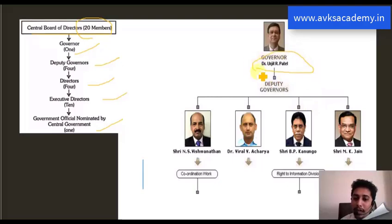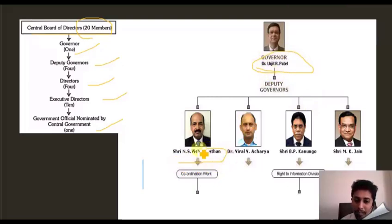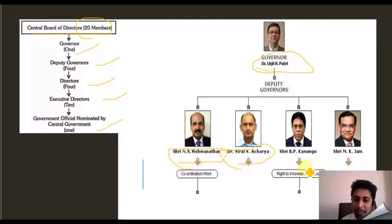Currently, the Governor of RBI is Urjit Patel, and the four Deputy Governors are: NS Vishwanathan, Viral V. Acharya — who is the person behind the controversy — BP Kanungo, and MKJ.